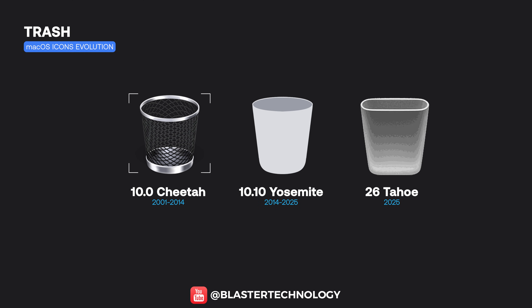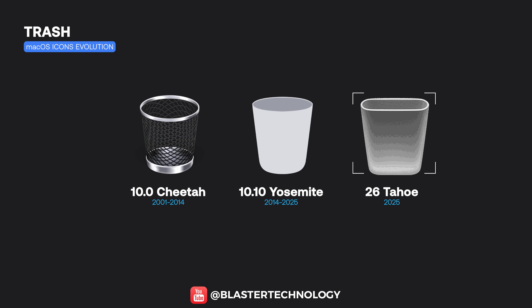The Trash icon started as a realistic metal bin in early macOS versions. With Yosemite, it became a transparent white bin, and in macOS Tahoe it received a new, more squared shape. When it's full, it looks like this.